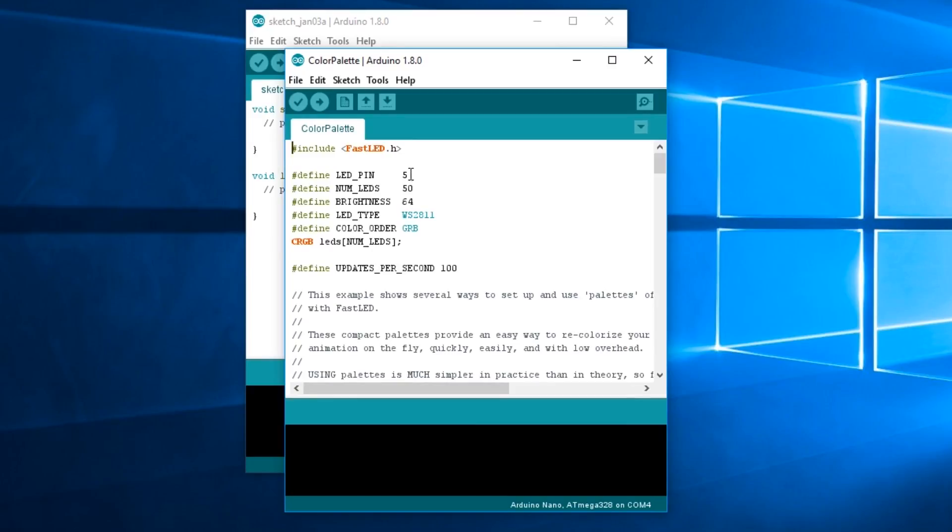The pin that we're going to have to hook the LEDs up to is going to be pin number five. Number of LEDs is 50 and that is indeed how long that strand is. Brightness can go anywhere from zero to 128. The default one is apparently 64 in this sketch. So we're just going to leave it. And the LED type is indeed a WS2811. So we're going to go ahead and upload that.